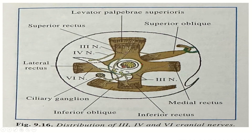You can see here the extraocular muscles. The superior division of the oculomotor nerve supplies the levator palpebrae superioris and superior rectus. The inferior division supplies the medial rectus, inferior rectus, and inferior oblique. You can also see the abducent nerve supplying the lateral rectus, and the trochlear nerve supplying the superior oblique.